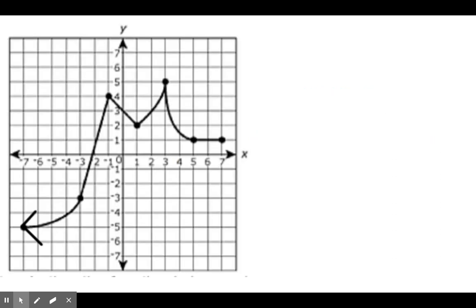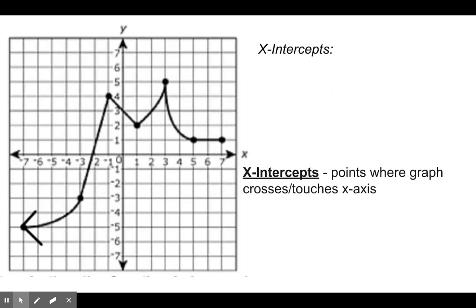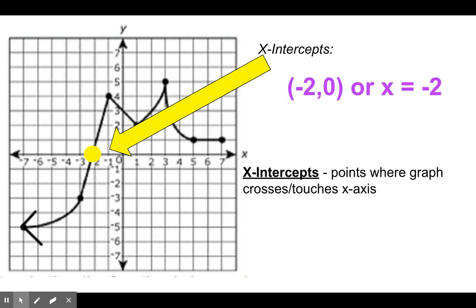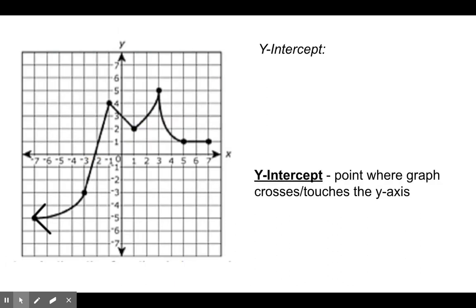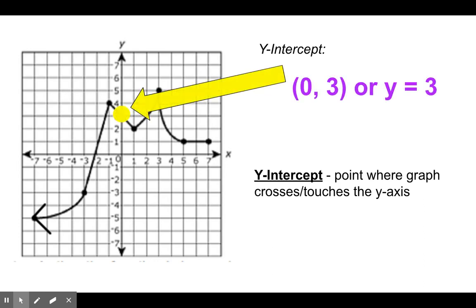Looking at some more examples of x intercepts, remember it's the point where the graph crosses or touches the x axis. It crosses at negative 2, so we say negative 2, 0, or x equals negative 2. The y intercept is where the graph crosses or touches the y axis. Here it crosses the y axis at 0, 3, or y equals 3.